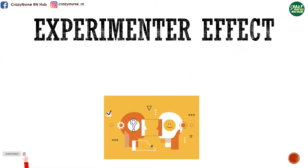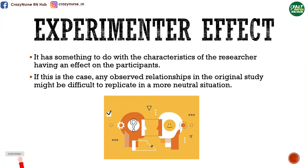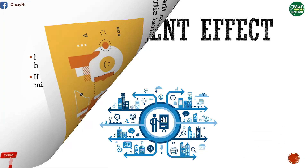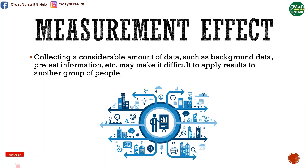Another one is experimenter effects. It has something to do with the characteristics of the researcher having an effect on the participants. If this is the case, any observed relationships in the original study might be difficult to replicate in a more neutral situation. And lastly, we have measurement effect. Collecting a considerable amount of data, such as background data, pre-test information, etc., may make it difficult to apply results to another group of people.